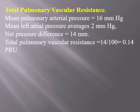The total mean vascular resistance in the pulmonary system: mean pulmonary arterial pressure is 16, left atrial pressure is 2 mmHg, so the net pressure difference is 14 mmHg. With blood flow at 100 mL per second, the total pulmonary vascular resistance is only 0.14 PRU — approximately one sixth of that in the systemic circulation.